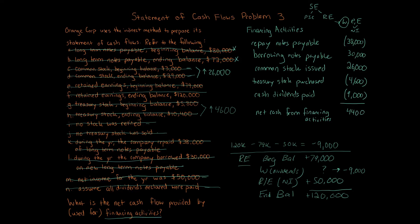Before finishing, note that some items like net income have no direct effect on financing activities, but we still need them to calculate other items. The cash dividends calculation is very difficult, but if you understand retained earnings and stockholder's equity using the WIRE acronym — Withdrawals, Investments, Revenue, Expenses — it can guide you through the calculations.